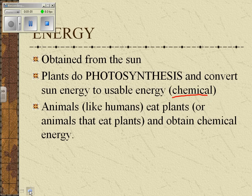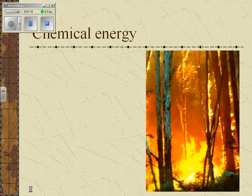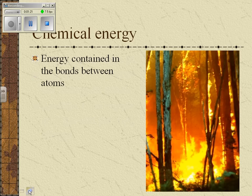Animals like us eat plants, or we eat animals that eat plants. We can be the primary consumer, or we can talk about secondary and tertiary consumers up the energy pyramid — how we get chemical energy. Chemical energy is the energy contained in the bonds between atoms.